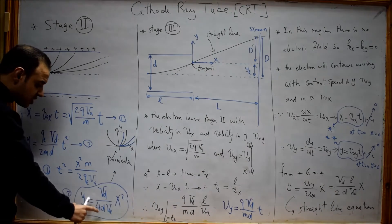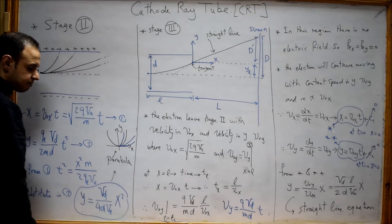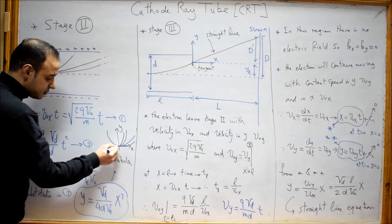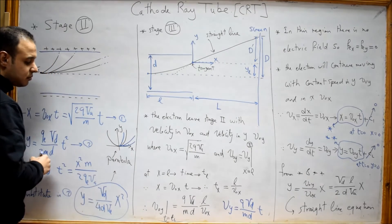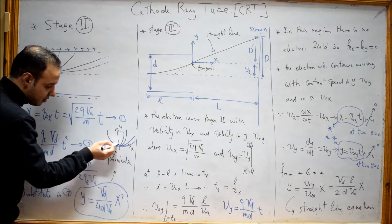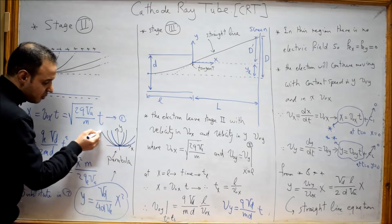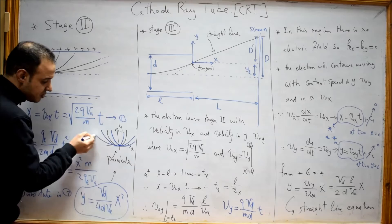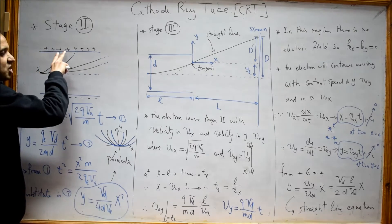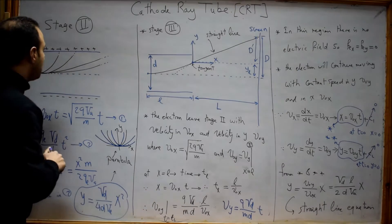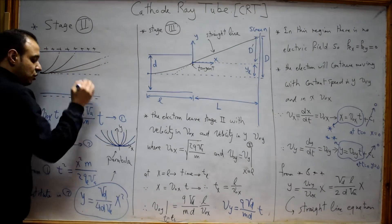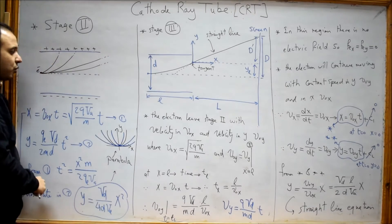This equation is a parabola equation, which is drawn like this. According to the value of the constant, it may take different shapes. So between the deflection plates, the electron will move according to a parabola equation.